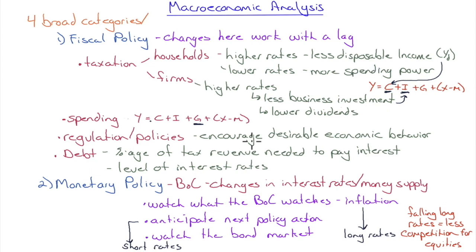Regulation and policies are intended to encourage desirable economic behavior. For example, a carbon tax is meant to make people think about their carbon footprint or switch to less pollution-intensive energy like solar or wind, which can be a major job creator. However, regulation can also be a job killer — very onerous labor laws, like those in some countries that make it extremely hard to lay off workers, make companies reluctant to hire, slowing job creation.